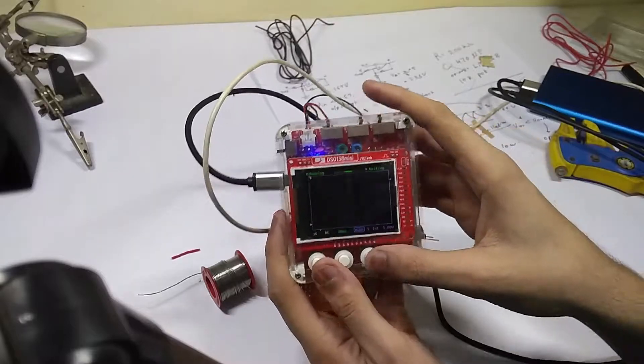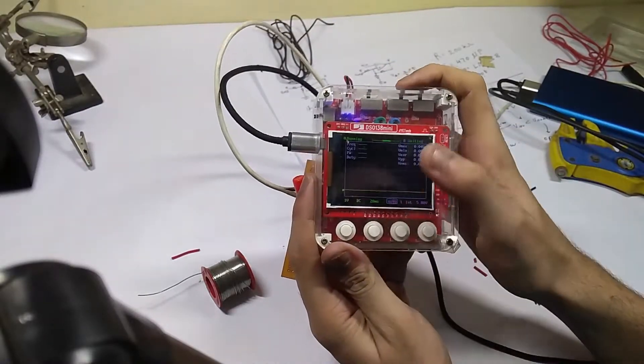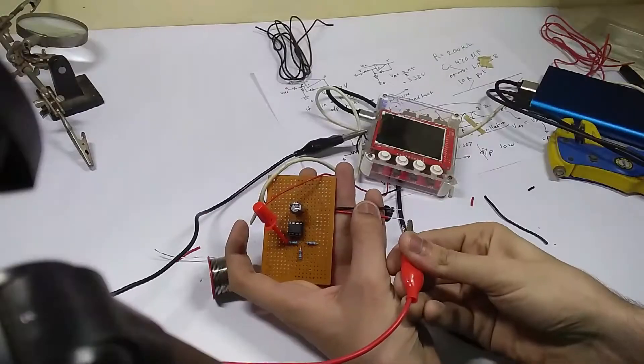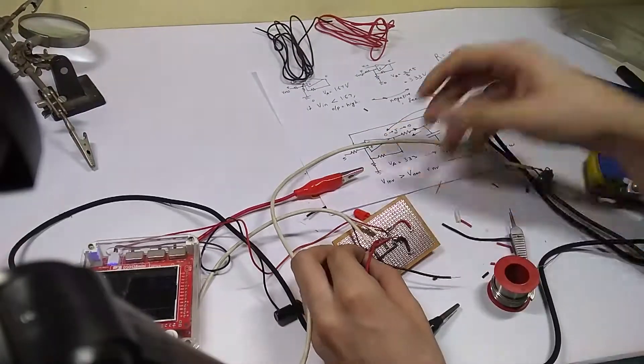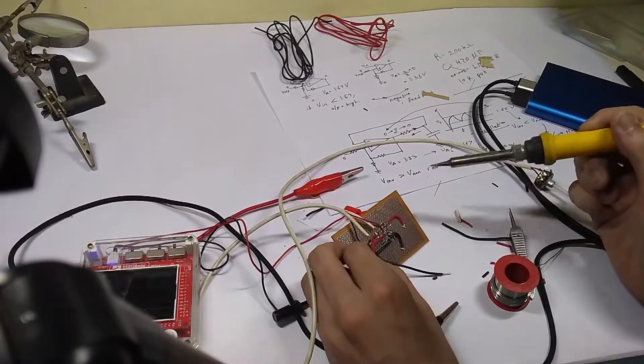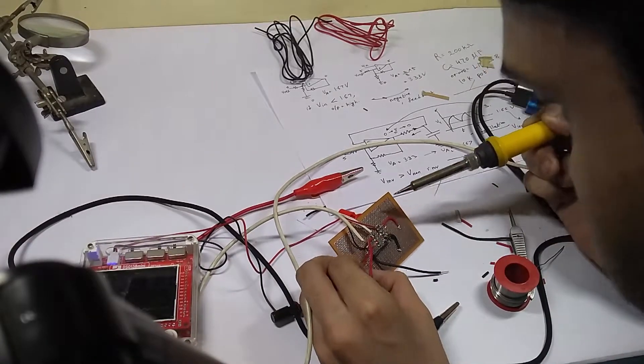I rigged up my DSO138 mini oscilloscope for testing. After setting up the test rig, I then powered on the circuit and expected it to deliver an output. It delivered the same mumbo jumbo which all newborn electronic babies give: blunder.